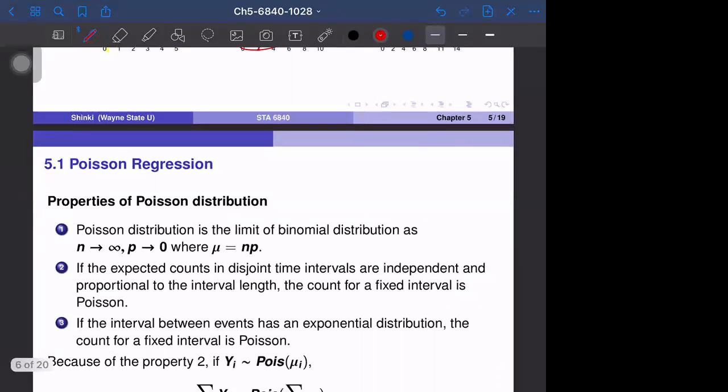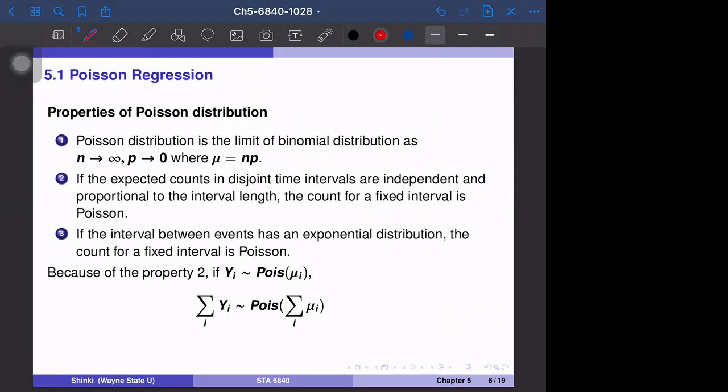This is the Poisson distribution. There are several important properties. First, Poisson distribution is the limit of binomial distribution when n goes to infinity and p goes to zero. n is the number of trials, so we have infinitely many trials but infinitely small probability. The product n times p is the expected number of success. When n goes to infinity and p goes to zero, the important quantity is what happens to np. Here, mu equals np, so the expectation of y equals mu. For binomial, the expectation is n times p.